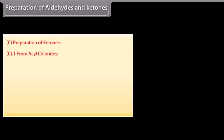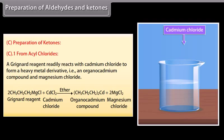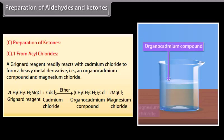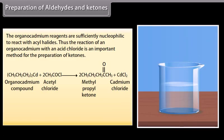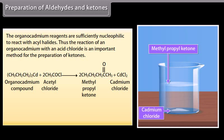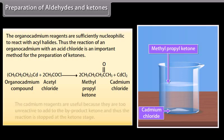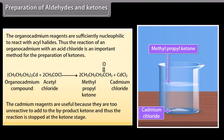Preparation of ketones from acyl chlorides: a Grignard reagent readily reacts with cadmium chloride to form a heavy metal derivative — an organocadmium compound — and magnesium chloride. The organocadmium reagents are sufficiently nucleophilic to react with acyl halides. The reaction of an organocadmium compound with an acid chloride is an important method for the preparation of ketones. The cadmium reagents are useful because they are too unreactive to add to the ketone product, so the reaction stops at the ketone stage.